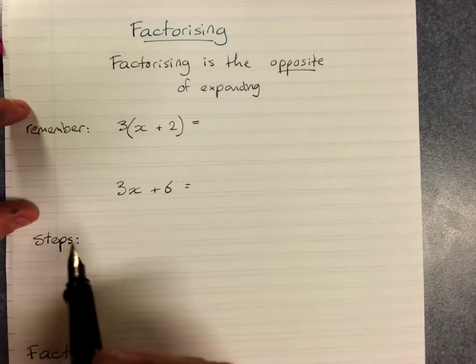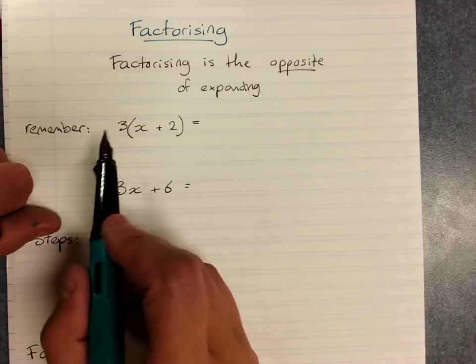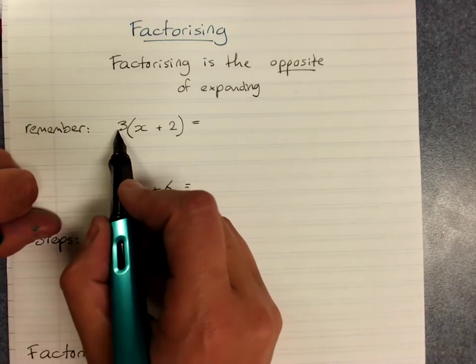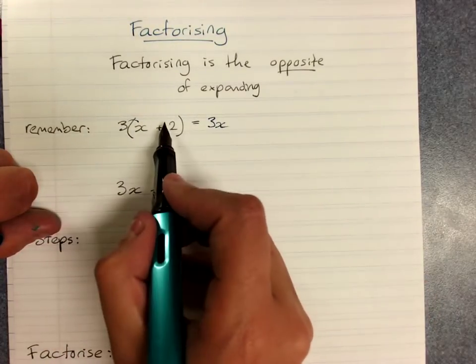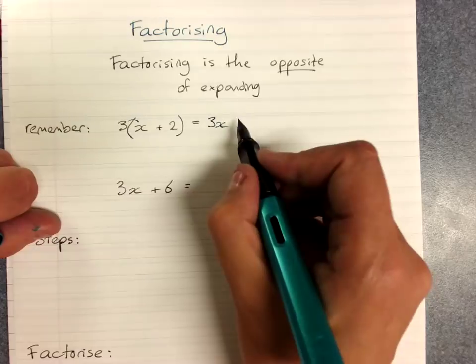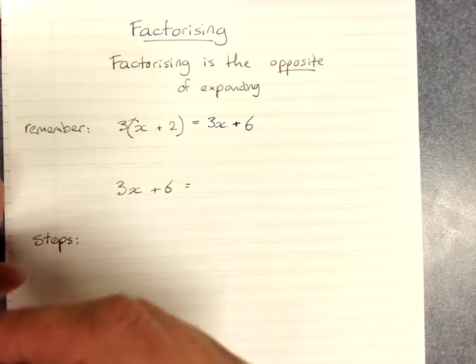So I'm just going to do a little reminder here. If you get asked to expand this expression, remember this means 3 times x, 3x, and 3 times 2 is 6. It's a positive answer, so we put plus 6. So that is expanding.